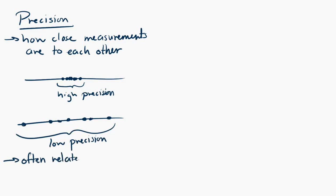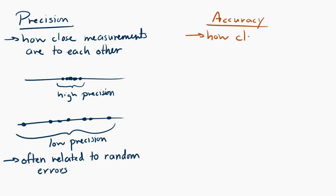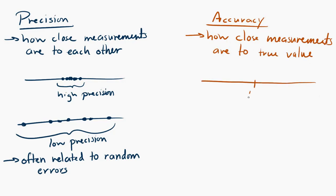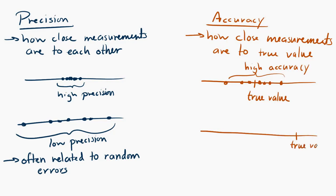Accuracy, on the other hand, refers to how close the measurements are to the true value. If you take a bunch of measurements and the average is very close to the true value, then you have high accuracy. If the average of all your measurements is offset from the true value, then you have low accuracy. Accuracy is often affected by systematic errors — large systematic errors result in low accuracy.